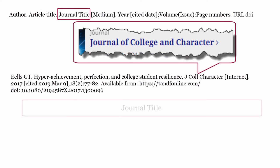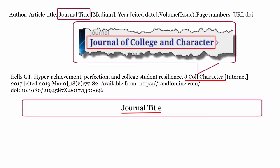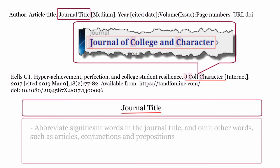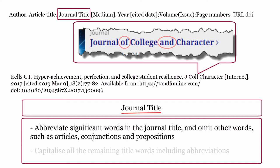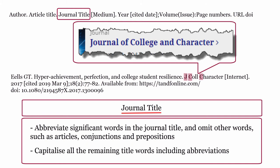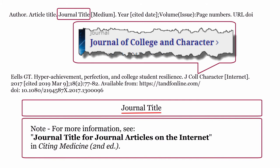Journal title: the journal title is formatted using the title of the journal. Abbreviate significant words in the journal title, and omit other words such as articles, conjunctions, and prepositions. Capitalize all the remaining title words, including abbreviations. For more information, see journal title for journal articles on the internet in Citing Medicine, second edition.